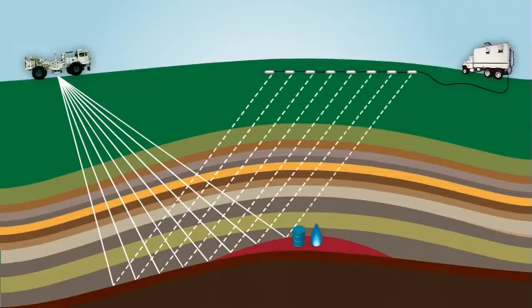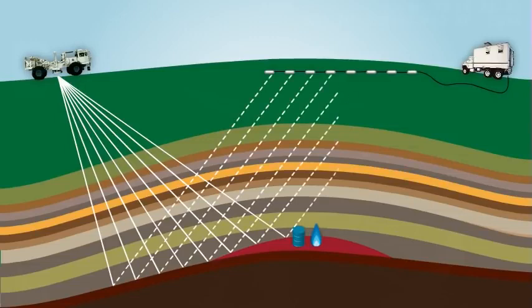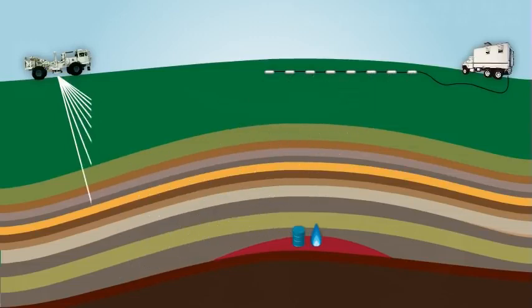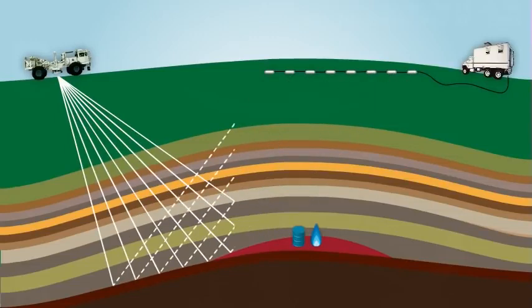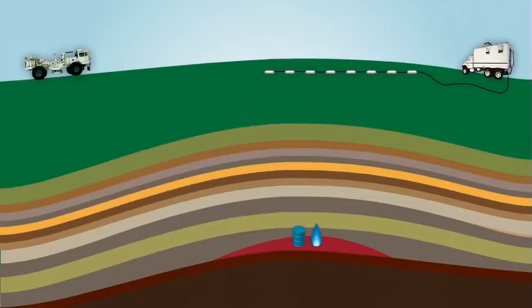Some of the wavelets bounce off of the boundaries between the rocks below the surface and are reflected back to the geophones that are waiting to record them. Each geophone along the cable sends the received wavelets to the recording truck where they're recorded and stored.